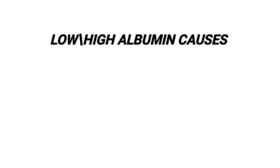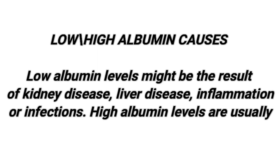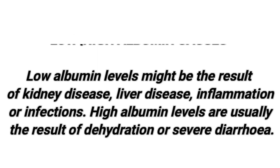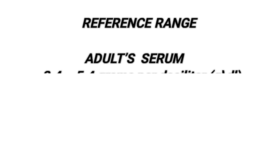Low albumin levels might be the result of kidney disease, liver disease, inflammation, or infections. High albumin levels are usually the result of dehydration or severe diarrhea. The reference range for adults in serum is 3.4 to 5.4 grams per deciliter.